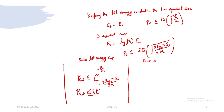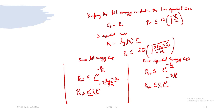For the same symbol energy case, P_E for 3 symbols becomes ≤ exp(−(3/2)(E_s/N_0)). This exponent is larger in magnitude than that of the 2-symbol case, so the 3-symbol constellation still performs better with the same symbol energy. This performance improvement will continue as we increase the number of symbols in the constellation.